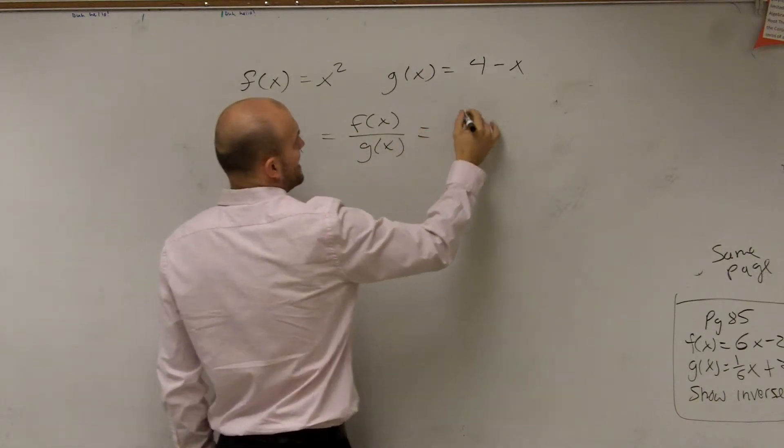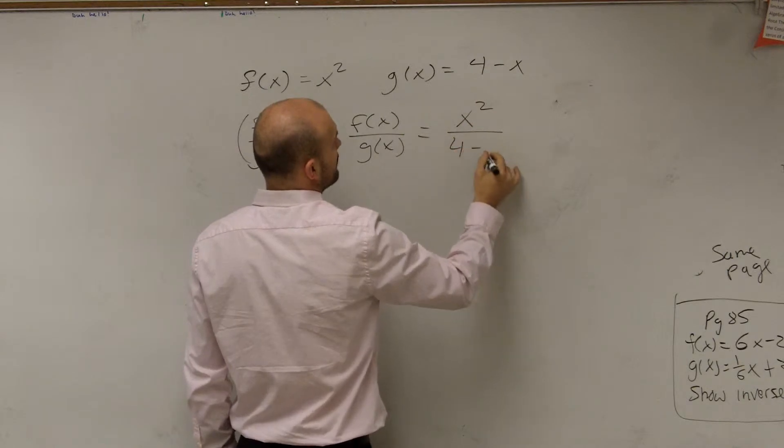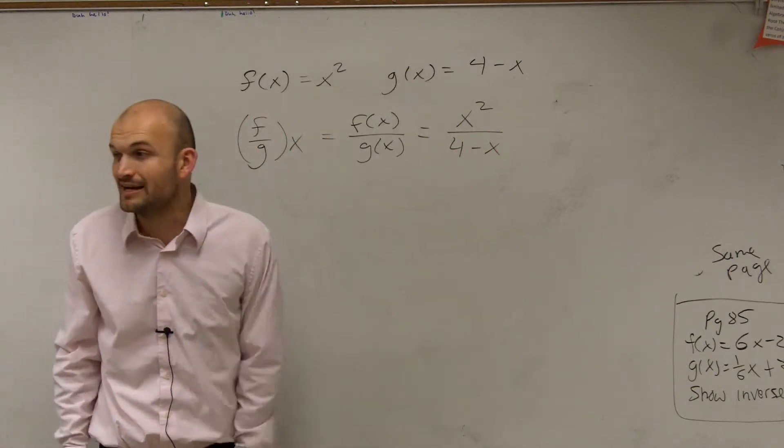Therefore, I'm taking x squared, dividing it by 4 minus x. Now, we look at this and we can't simplify it any further.